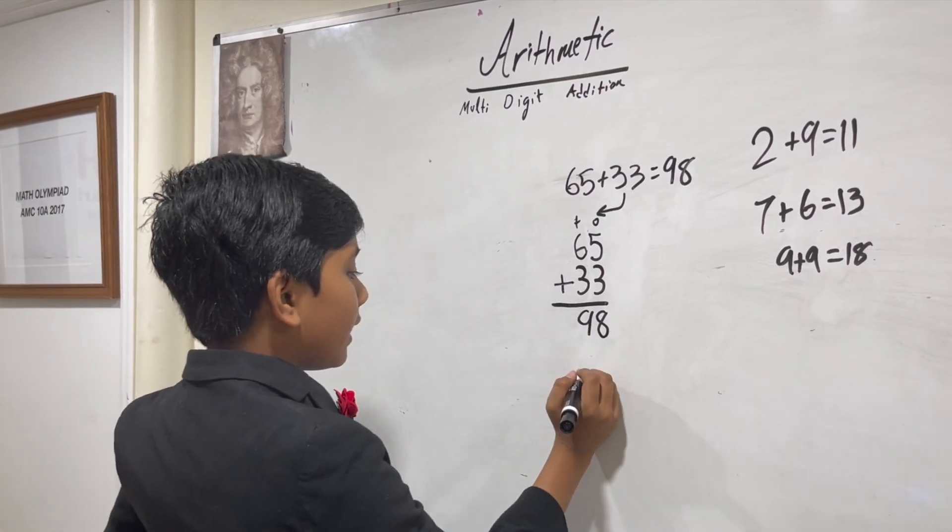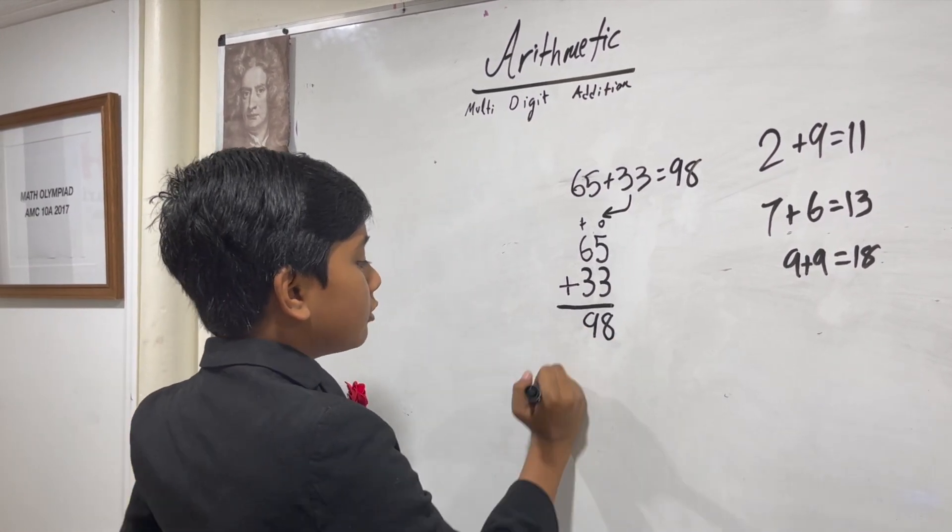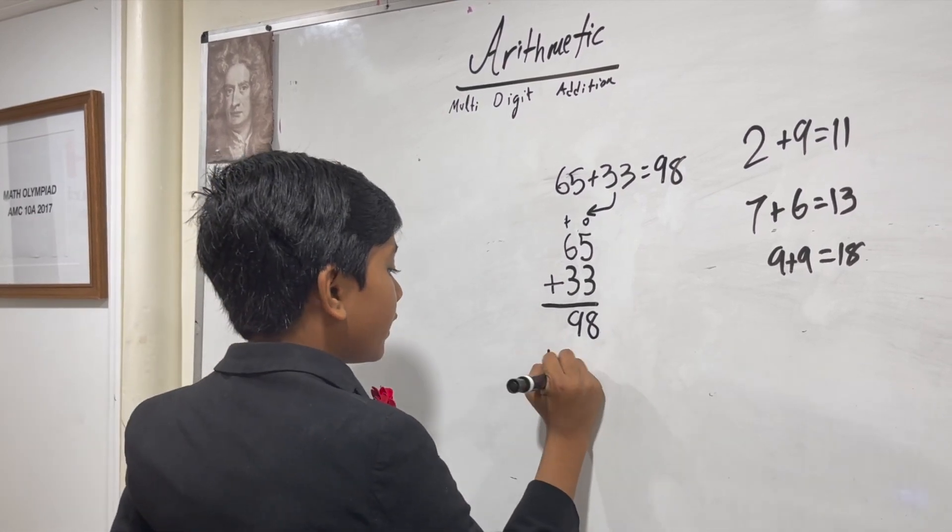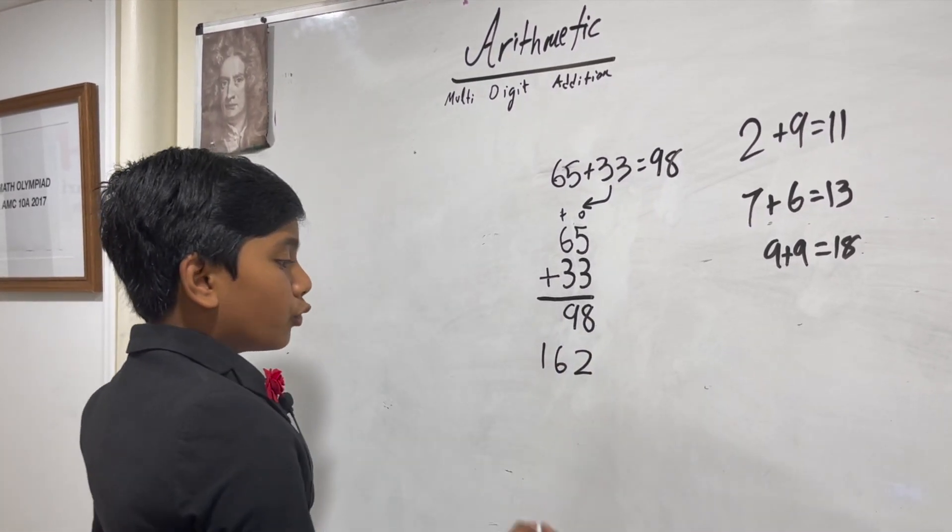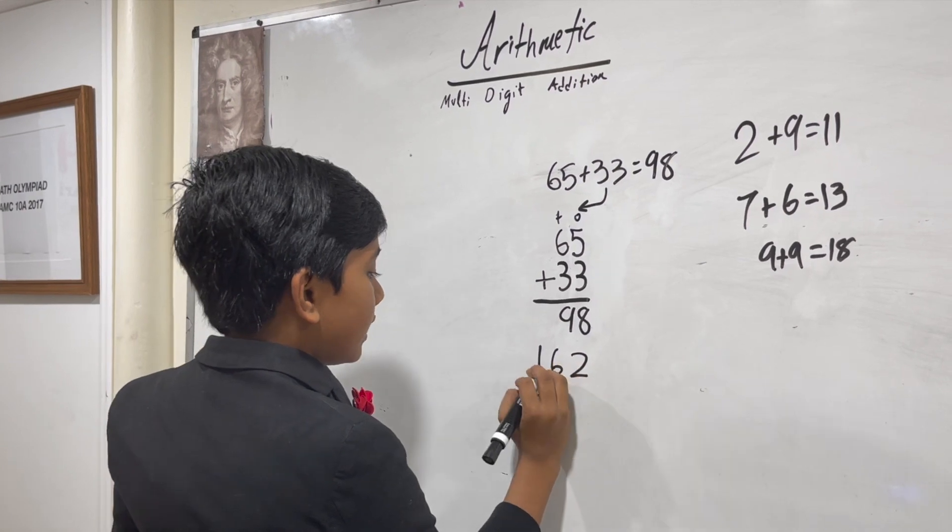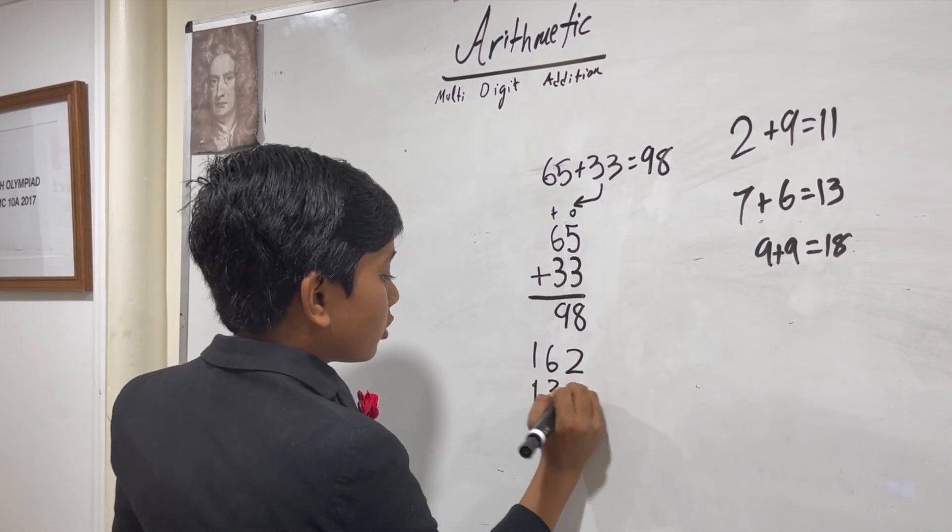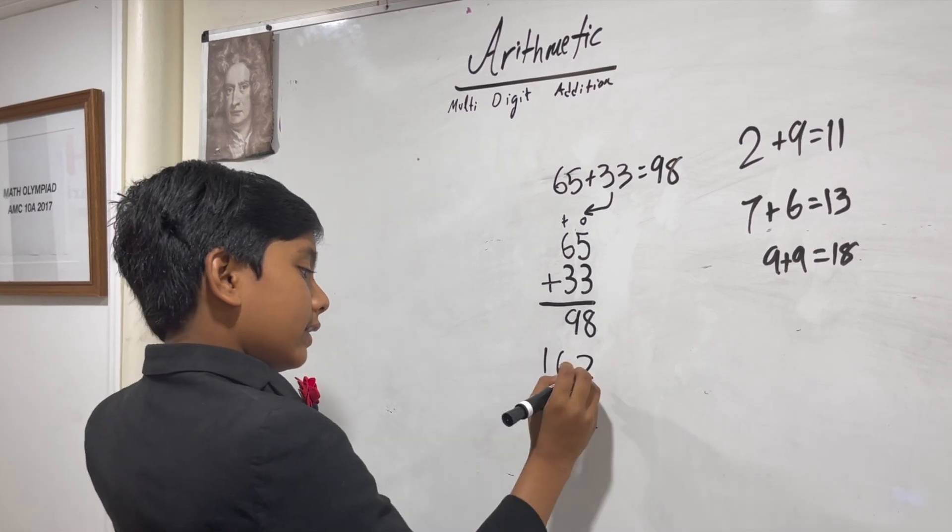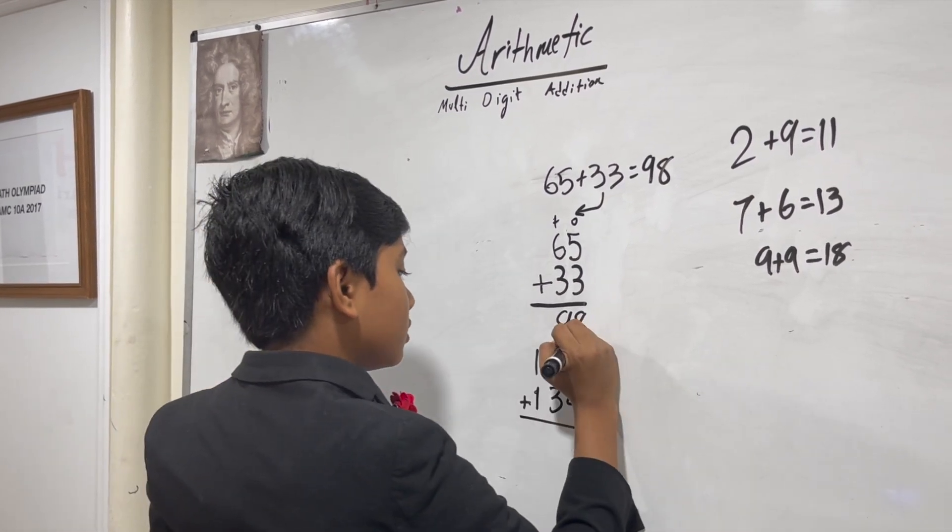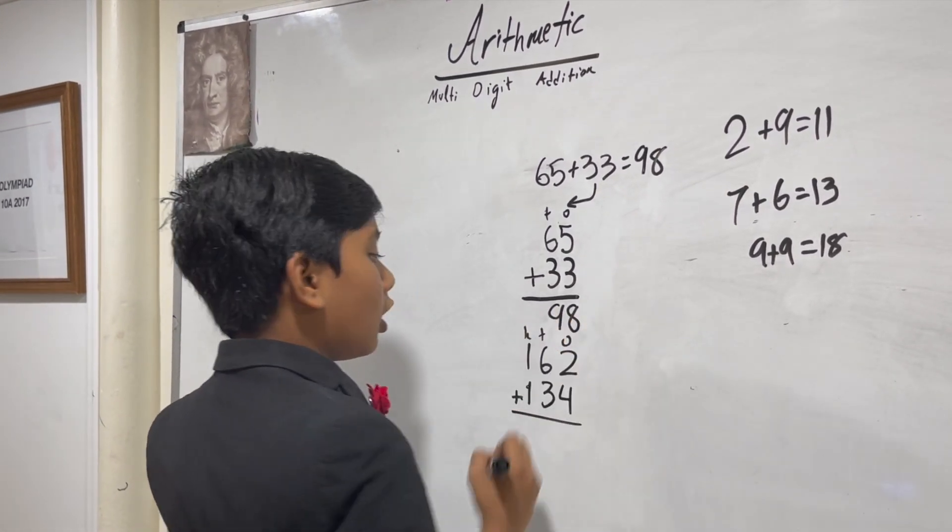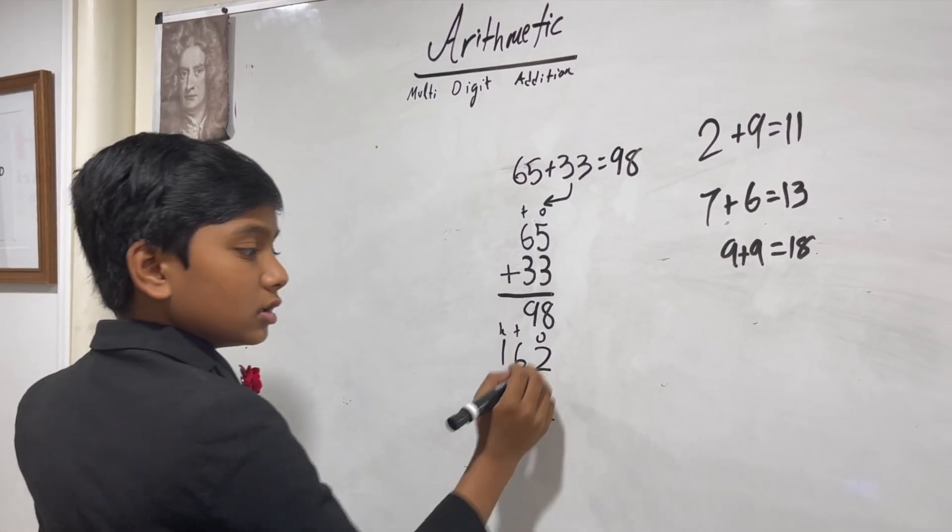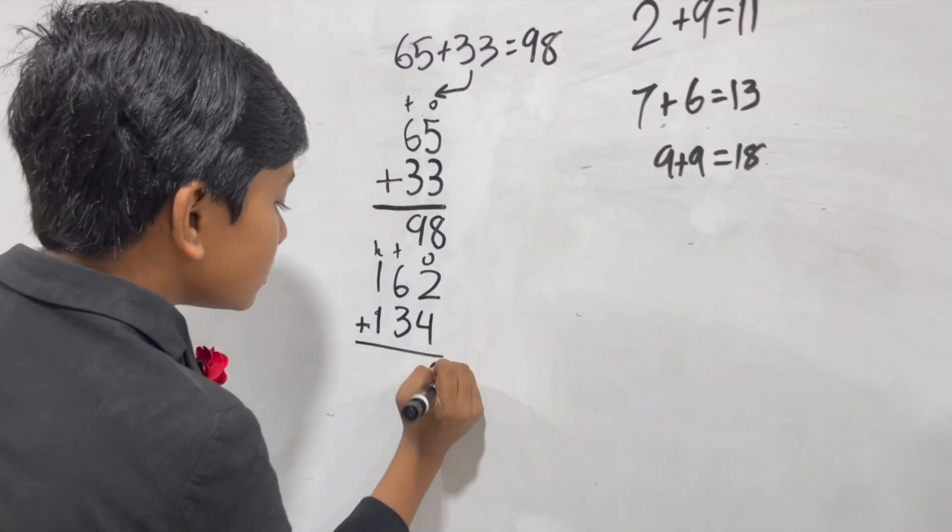All right, now what if we get some higher numbers? Let's do one with three digits: 162 and 134. Adding it is also pretty simple. You just go column by column right to left. So 2 plus 4 is 6, 6 plus 3 is 9, 1 plus 1 is 2.